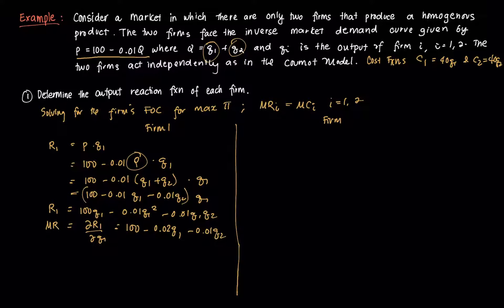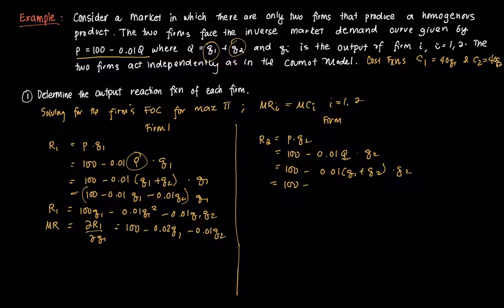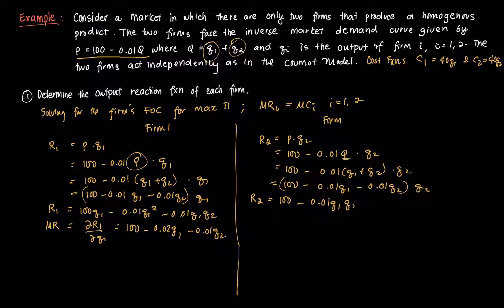For firm 2, R2 = P × Q2. Substituting Q = Q1 + Q2, we get R2 = (100 − 0.01(Q1 + Q2)) × Q2, which expands to R2 = 100Q2 − 0.01Q1Q2 − 0.01Q2².